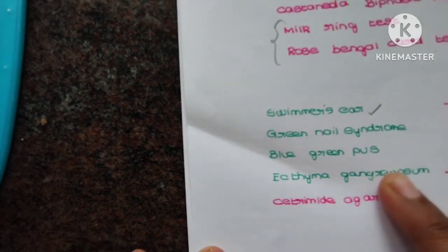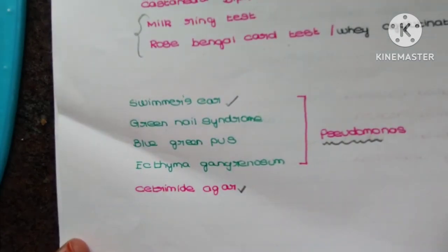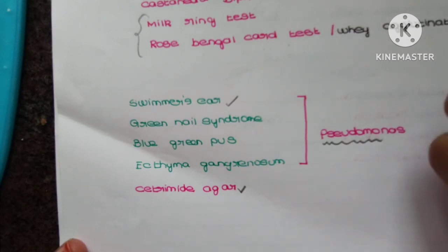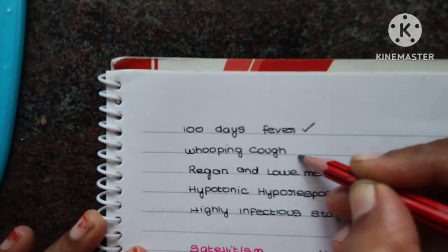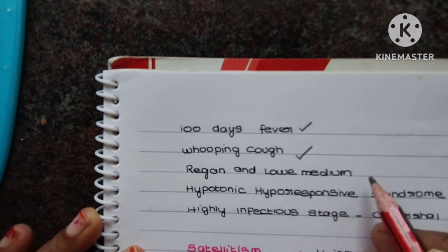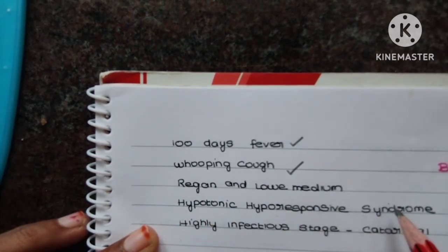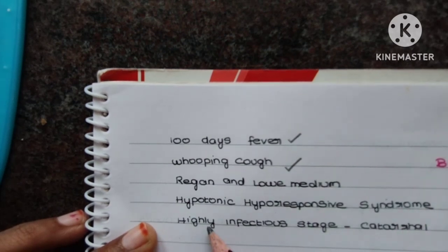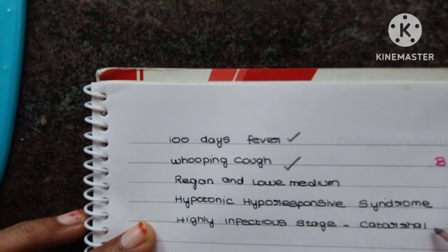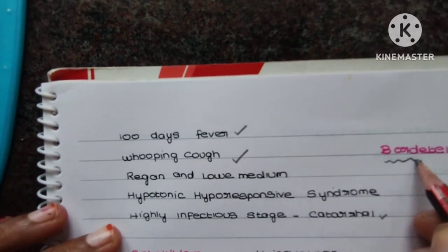Next: colors like green nail syndrome or blue-green pus syndrome indicate Pseudomonas. This organism causes swimmer's ear, green nail syndrome, blue-green pus syndrome, and ecthyma gangrenosum. The selective medium is cetrimide agar. Also, Pseudomonas is the only organism that can grow in a disinfectant. Next, 100-day cough, the selective medium is Regan-Lowe medium, hypotonic hyporesponsive syndrome is a vaccine complication, and the highly infectious stage is the catarrhal stage — the organism is Bordetella pertussis.